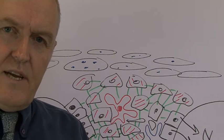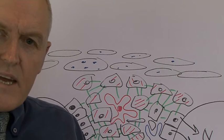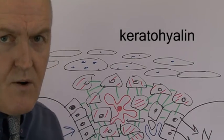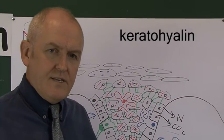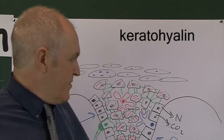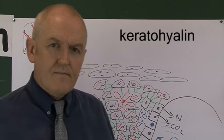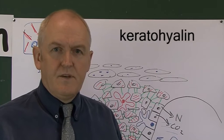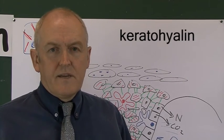These dark-staining granules contain a substance called keratohyalin. What keratohyalin does is convert the proteins from the tonofilaments inside the cells into another type of protein.